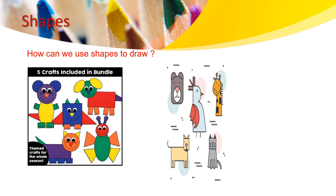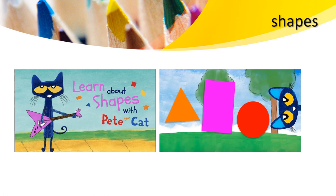During this class we will be learning how to use shapes to draw different animals. We will learn how to draw a dog, a cat, a butterfly. You guys are going to use cardboard to create them, or you're going to draw them. We will watch the video to learn about shapes with a Petty Cat.